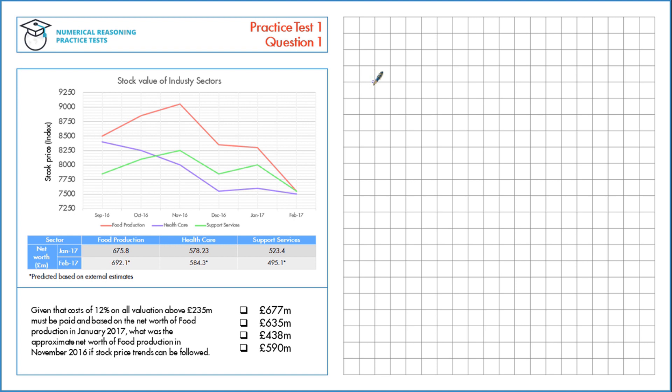Given that costs of 12% on all valuation above $235 million must be paid and based on the net worth of food production in January 2017, what was the approximate net worth of food production in November 2016 if stock price trends can be followed?